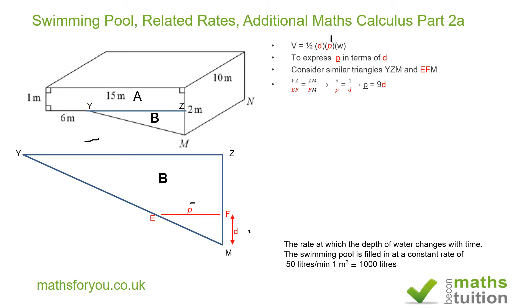Moving on, V equals one half times d times 9d times w, where w is the width of the swimming pool. That gives V equals one half times w times 9d squared. Differentiating both sides implicitly, dV/dt equals one half times 10 (the width) times 9 times 2d times dd/dt, because differentiating 9d squared implicitly gives 2d dd/dt.